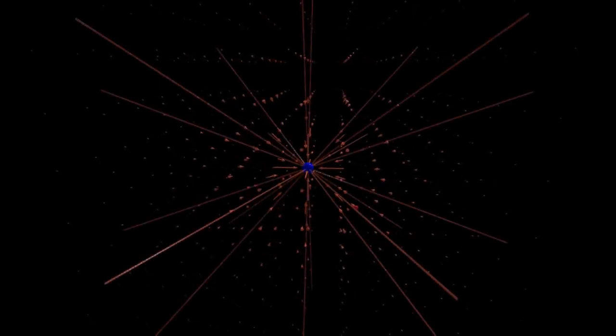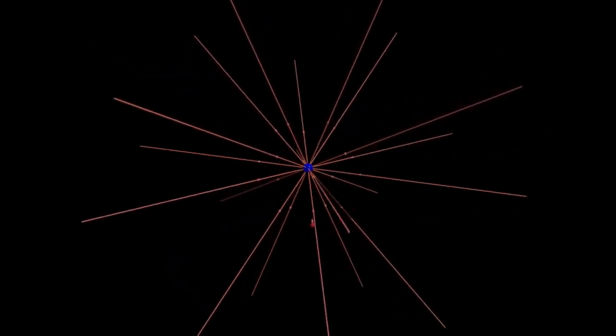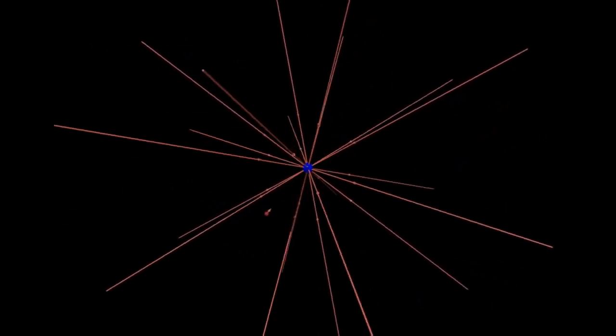As was the case for the single positive source charge, the field resulting from a negative source charge is spherically symmetric. For the positive source charge, the field lines came out of the charge, while for the negative charge, the field lines go into the charge.